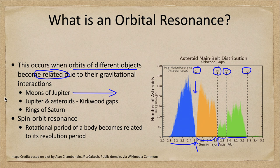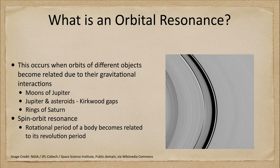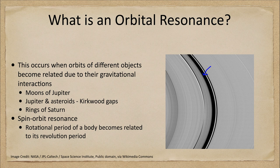We see the same pattern with the rings of Saturn. Here is an image of the rings of Saturn, and they are not just a flat sheet — there are a lot of structures within them. All of these structures are caused by the moons. For example, we see a large gap associated with a resonance with the orbit of one of the moons of Saturn, and all of the little structures we see are created by different resonances with the moons.